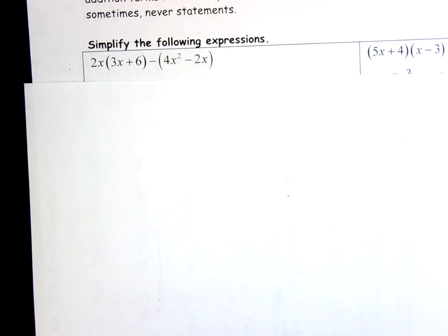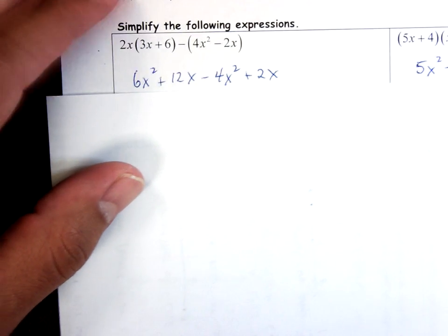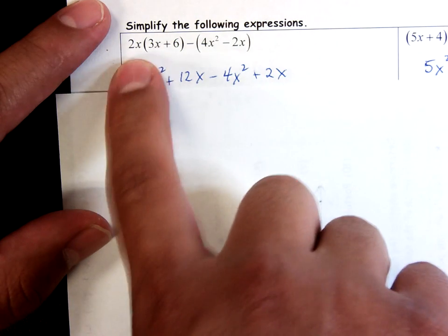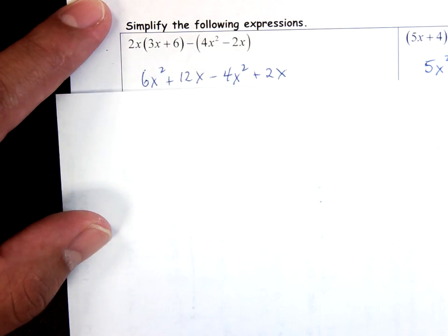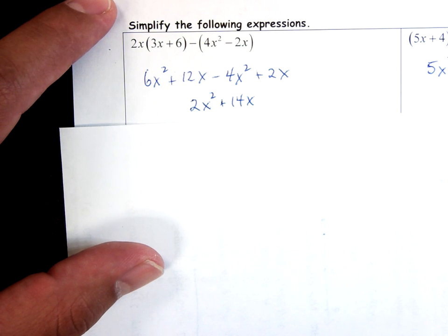All right, so first flip lesson, looking quick to go over these. I would advise trying these on your own first and just checking your answers against mine. So first you've got to get rid of the parentheses. You'll get 6x² + 12x - 4x² + 2x by just distributing the 2x and the negative sign here. Combine your like terms and you'll get 2x² + 14x.